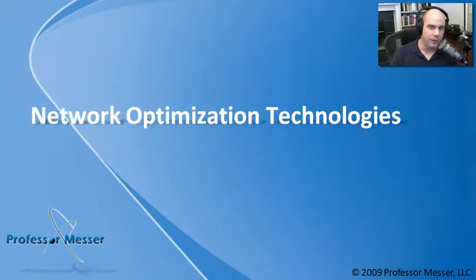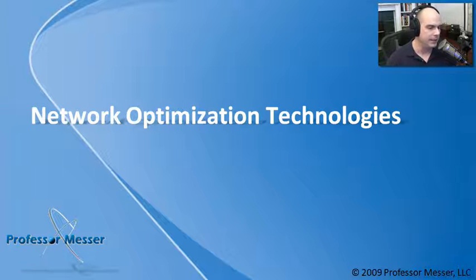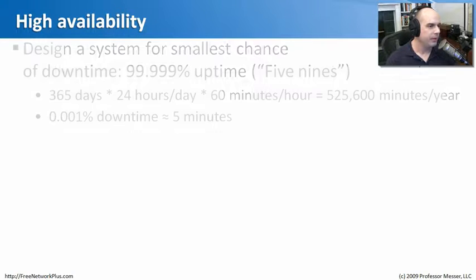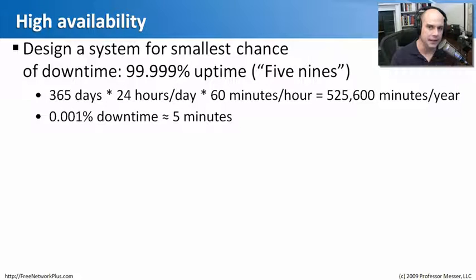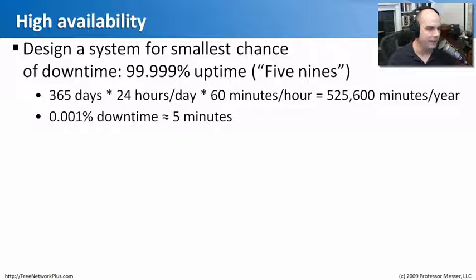Now that we know why we want to optimize the network, let's talk about how. We can start with high availability. If we're designing a network from the ground up, we would want to put components in place that are designed to be up all the time. If something has a high level of availability, it's going to have things like 99.999% uptime.